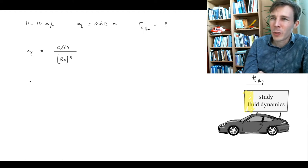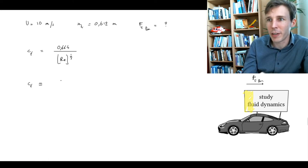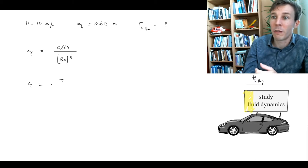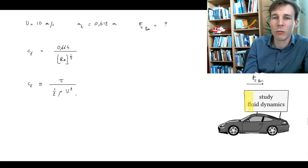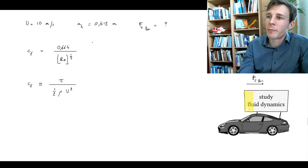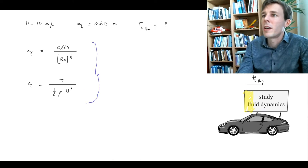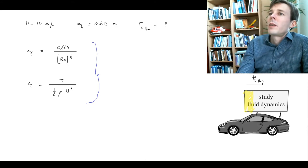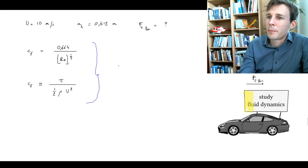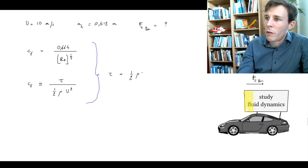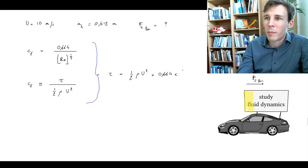The friction factor is by definition a non-dimensional version of the shear tau we're interested in. Tau is non-dimensionalized by comparing it to one-half of rho u squared. If you combine those two equations you can isolate tau, the shear. Then we're going to integrate the shear over the surface. Isolating tau gives us tau equals one-half rho u squared multiplied by 0.664 multiplied by Re_x to the power minus one-half.